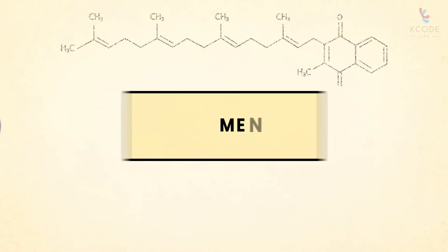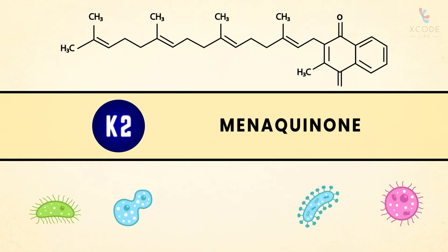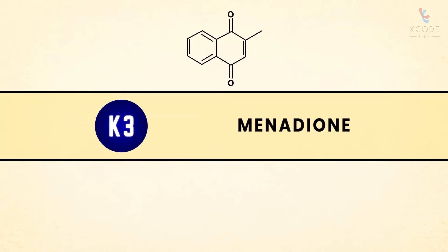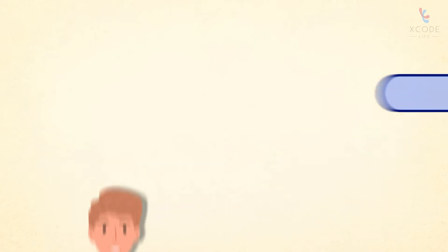K2, also called menaquinone, is produced by bacteria. A type of bacteria in our body called commensal bacteria produces vitamin K2. K3, also called menadione, is a synthetic and artificially produced form of vitamin K.